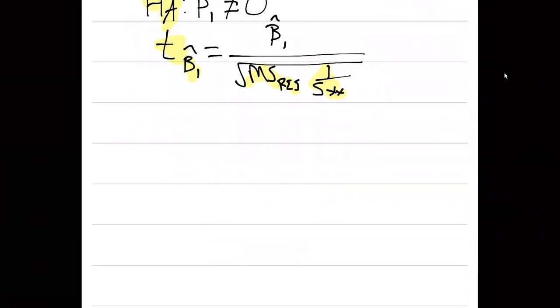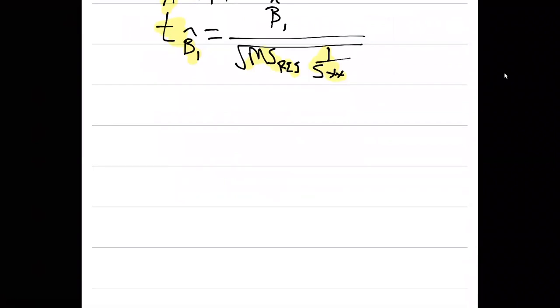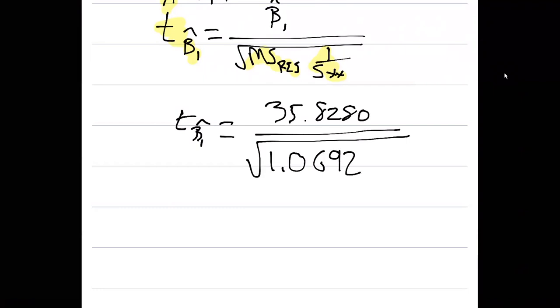We're going to calculate this by plugging in the numbers that we have in our formula. So t sub beta one hat is going to equal, you'll remember we found 35.8280 as beta one hat. We'll divide that by the square root of 1.0692, and then we multiply that by one over 0.0221. Remember that our 0.0221 was our s sub x x, and 1.0692 was the mean square for the residuals from our regression equation.